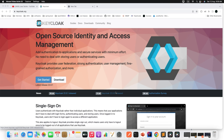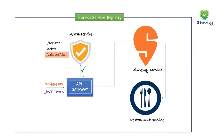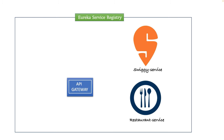If you remember, I already explained how to implement security in microservice architecture using JWT. Let's have a quick recap of how we designed security in our microservice application. In a typical microservice architecture, we have basic components like a Sugi microservice, a Restaurant microservice, a Eureka service registry, and an API Gateway for routing all incoming requests.